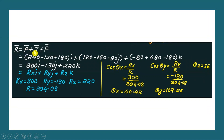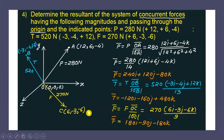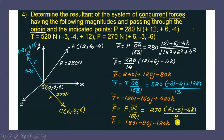To find F vector: F vector = 270 × (OC vector / |OC vector|). OC vector = 6î − 3ĵ − 6k̂. |OC| = √(6² + 3² + 6²) = 9. Simplifying: F vector = 180î − 90ĵ − 180k̂ newtons.